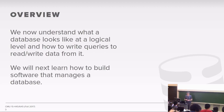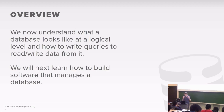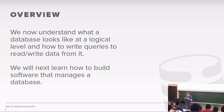So far in the course, we've talked about application-level things — the relational model, the normal forms, SQL. These are all the things that an application programmer has to deal with. Now we're switching over to talk about how you actually build a database system that's going to manage the database and do all the things we talked about before.